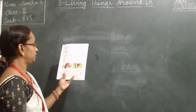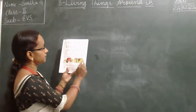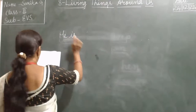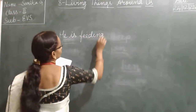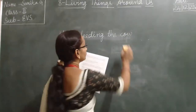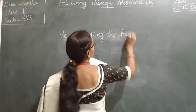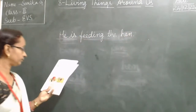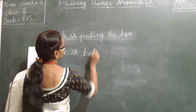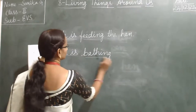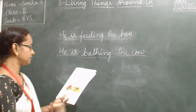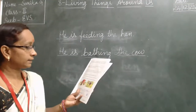In his first picture, he is feeding the hen. Second picture, Rakesh is bathing the cow. First picture: he is feeding the hen. Second picture: he is bathing the cow.